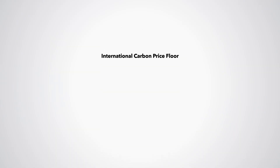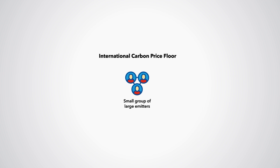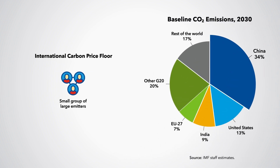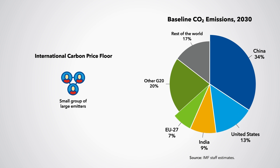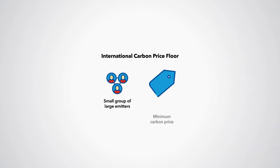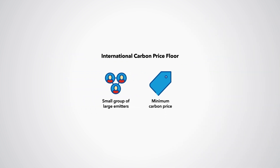The IMF staff proposal for an international carbon price floor has two key elements. First, a focus on a small number of large emitting countries to facilitate negotiation while covering the bulk of global emissions — China, the EU, India and the US alone account for over 60% of projected global baseline emissions by 2030, and including the rest of the G20 brings this up to over 80%. Second, a focus on a minimum carbon price because this is an efficient and easily understood parameter. Simultaneously scaling up carbon pricing among large emitters would be the best way to address competitiveness and free rider concerns.